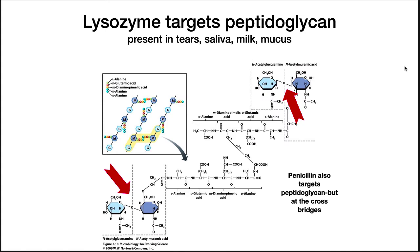As part of our immune system, we synthesize lysozyme. This enzyme attacks the link between NAM and NAG, breaking it apart. If enough of these bonds are broken, it will kill the bacterium. Lysozyme is present in tears, saliva, milk, and mucus, and is a very effective defense against bacteria.